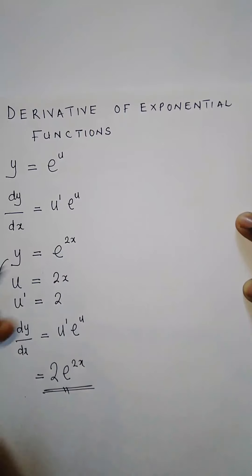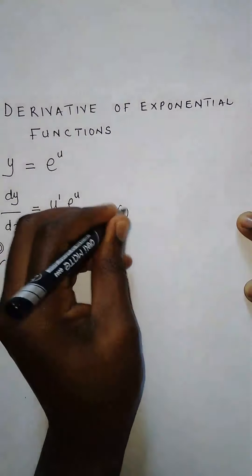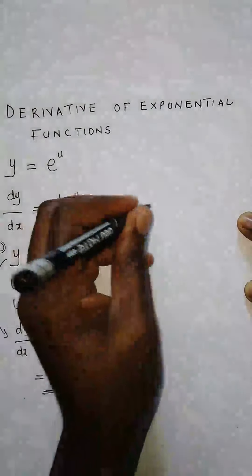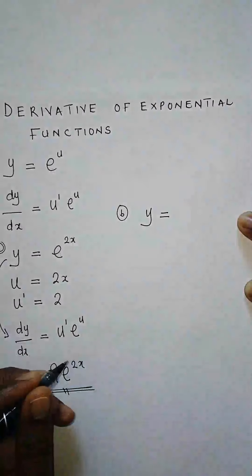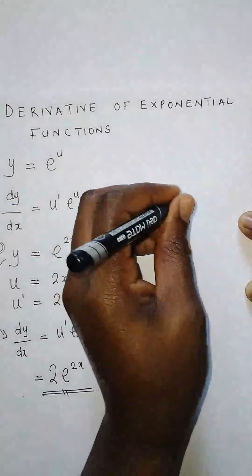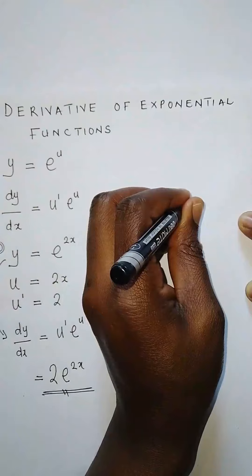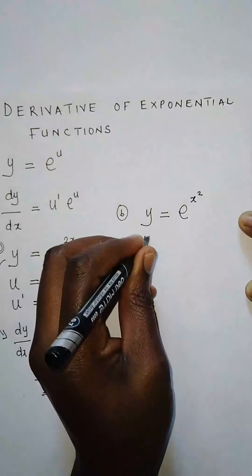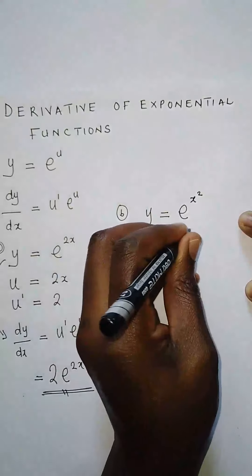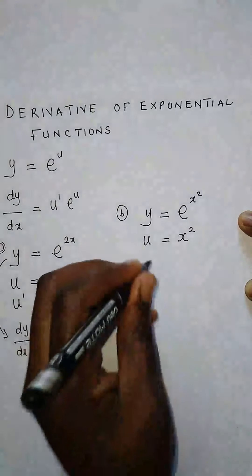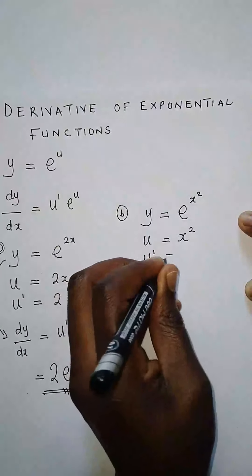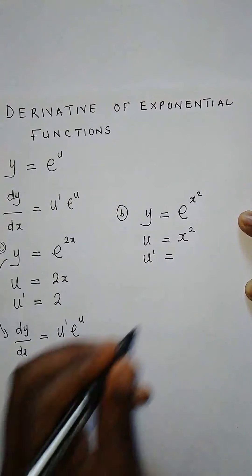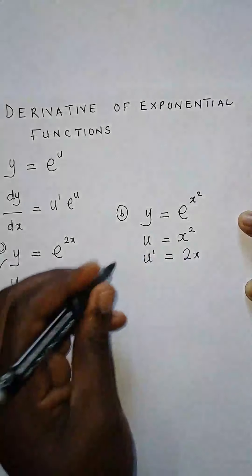Let's try another one. That was example a; now let's look at example b. If we have y is equal to e to the power x squared, we identify our u. Our u is x squared. Now du/dx, which is u prime — differentiating with respect to x, we get 2x.